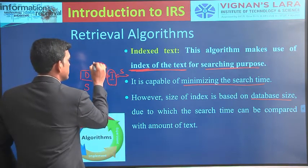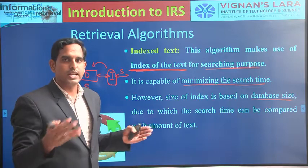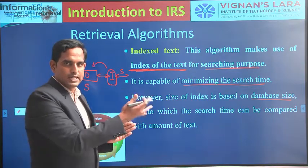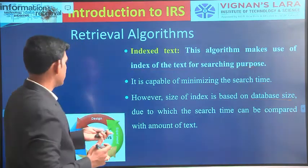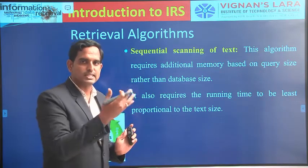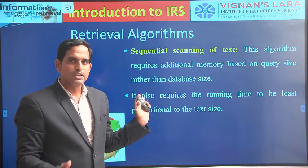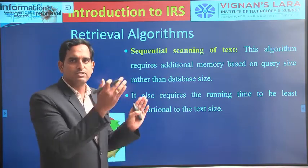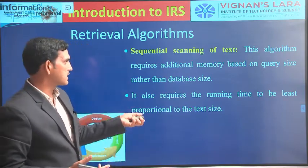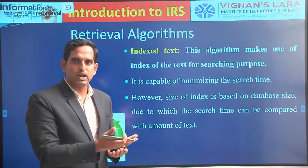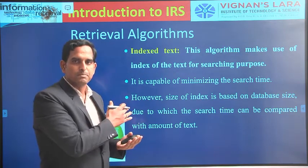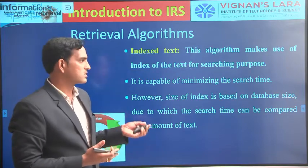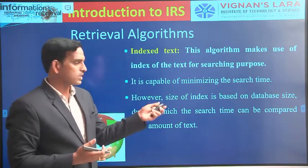If the database is large, you must implement the index so that searching will be faster. Your index file size will also depend upon the database size — if the database size is very large, your index size will also increase. So retrieval algorithms are basically of two types: sequential scanning of text, which is slow for large databases but faster with small queries; and indexed text, where all text is first indexed and searching is done through the index file for faster retrieval.